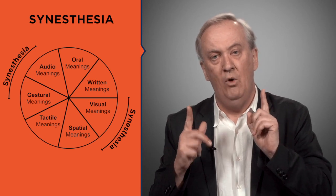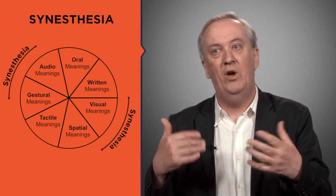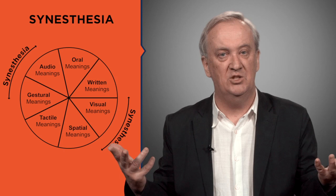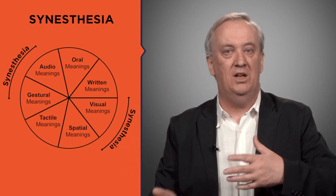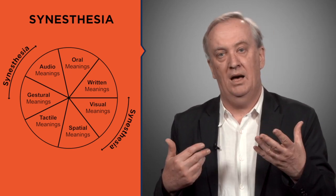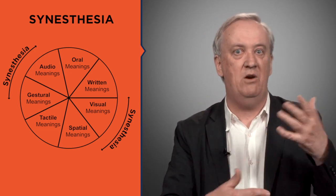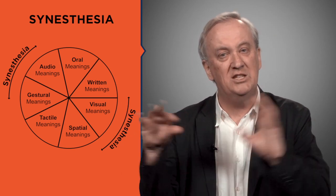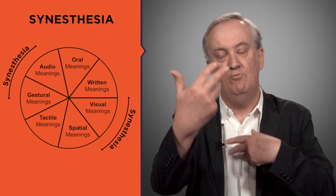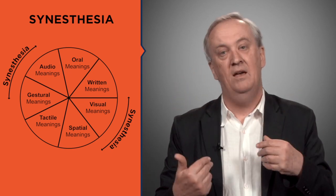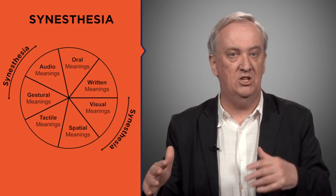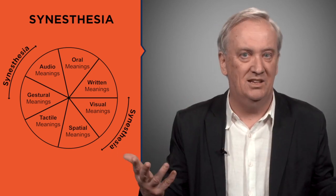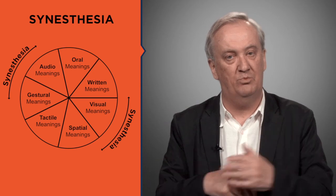When we swap between one mode and another, we call this a process of synesthesia. We can mean something in image, mean it in writing, speak about it, and live it in embodied experience with objects and spaces. What we have is a series of transpositions between one form of meaning and another. That process of transposition, we say, is like synesthesia — we use the word synesthesia to describe this as a kind of psychological process.